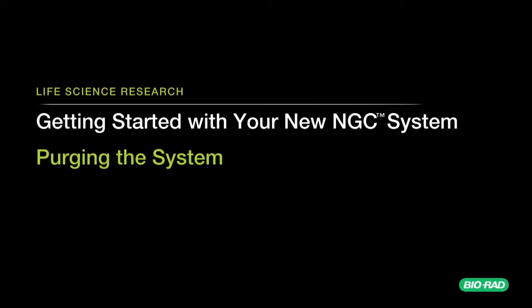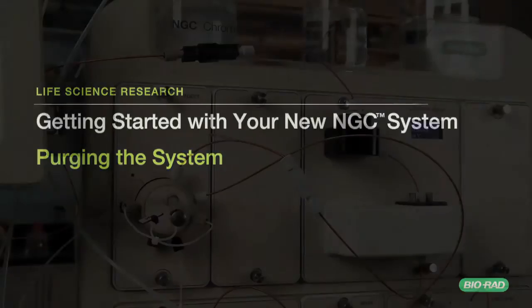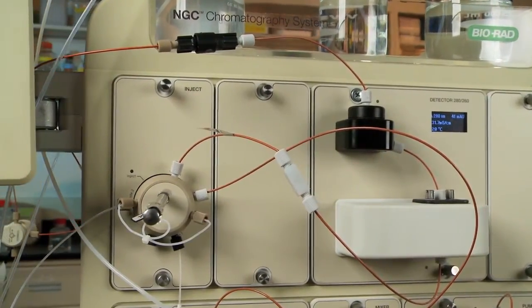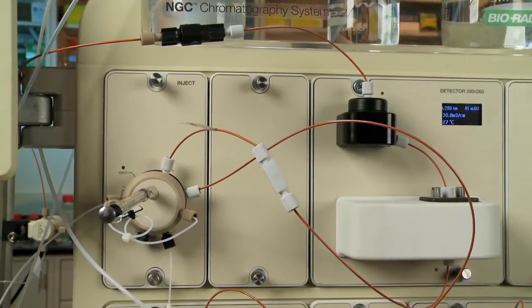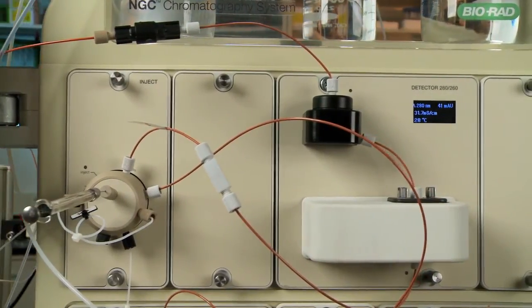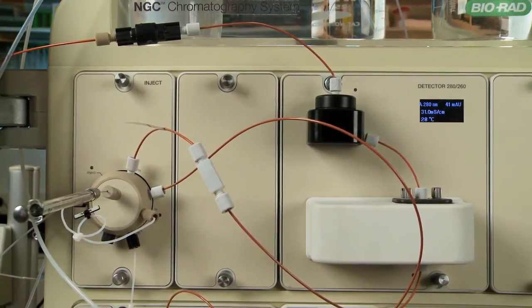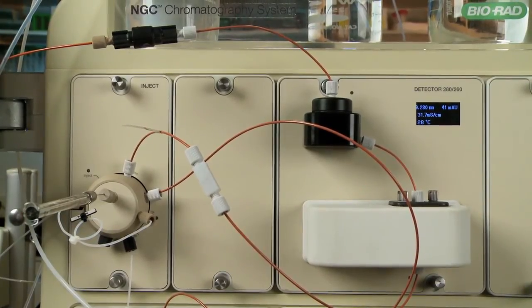This video demonstrates the two methods used for purging your NGC system. Before purging the system, be sure to take the column out of line, either by physically removing the column and replacing with a union, or, if using a column valve, make sure it is in the bypass position.